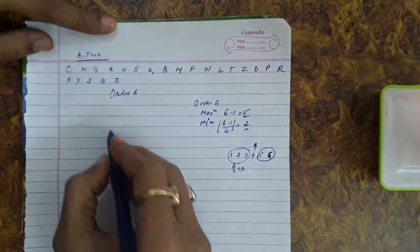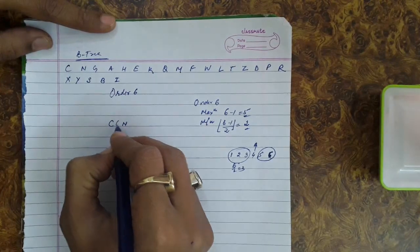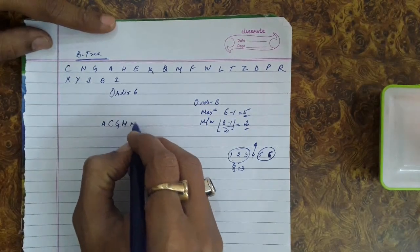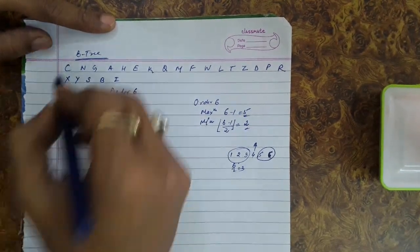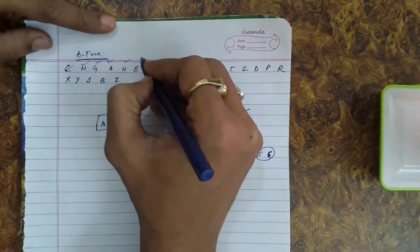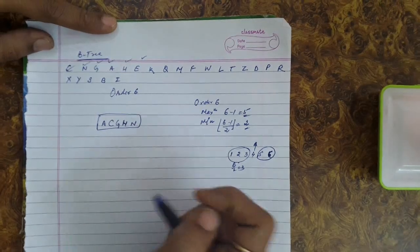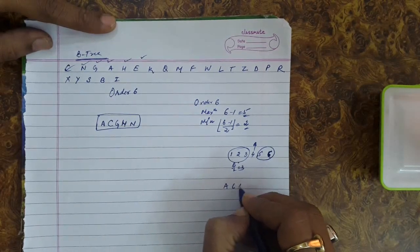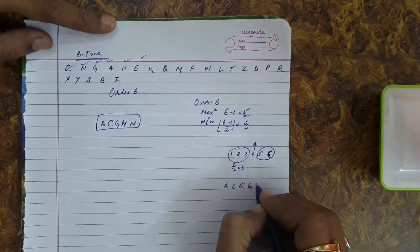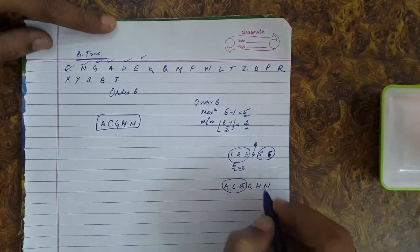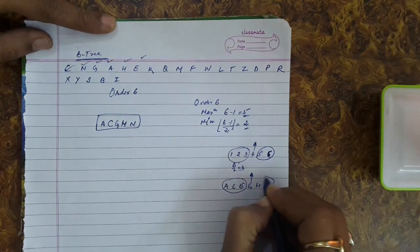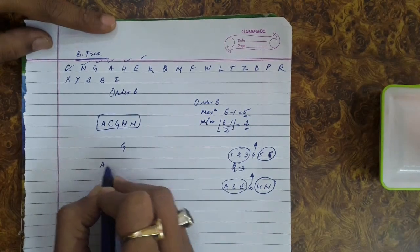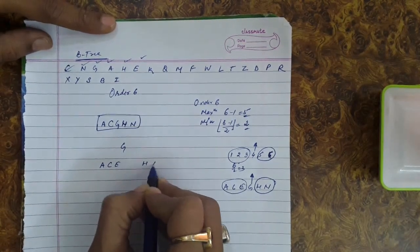We insert keys C, N, G, A, H — up to this there is no problem. Now let's insert E. With the insertion of E the maximum condition will get violated. Inserting E virtually gives us A, C, E, G, H, N. m/2 = 3 keys are retained on the left side, G (the median key) is sent upwards, and a new node is created with H and N on the right side.